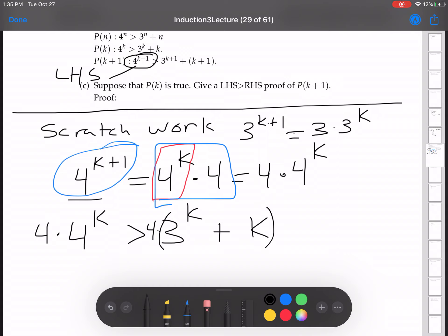Now this side, if you multiply this, distribute this 4 through, you get 4 times 3 to the k plus 4k. And now remember, we want this to be bigger than 3 to the k plus 1 plus k plus 1, the right-hand side.